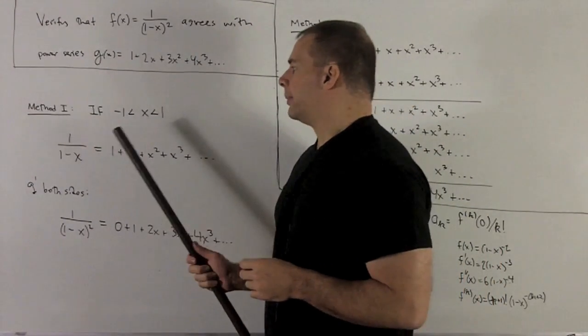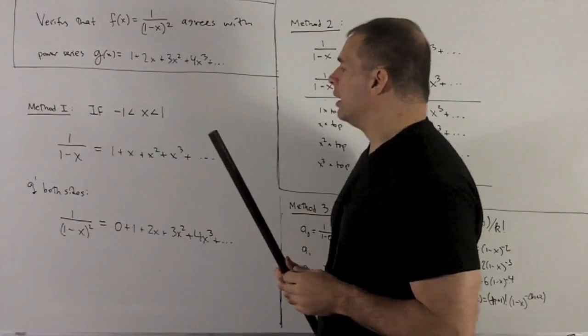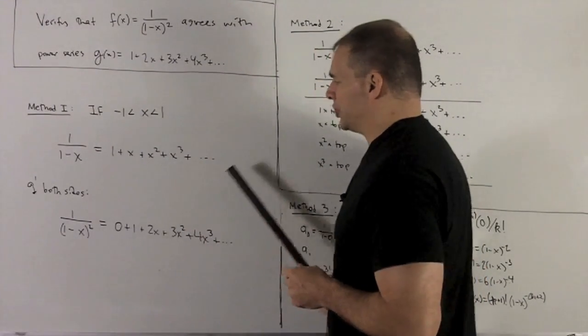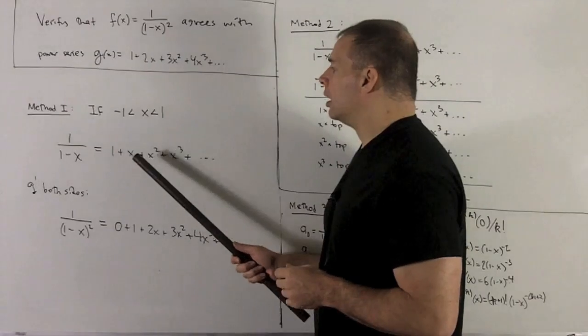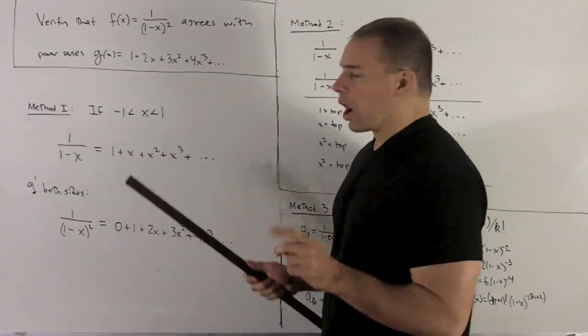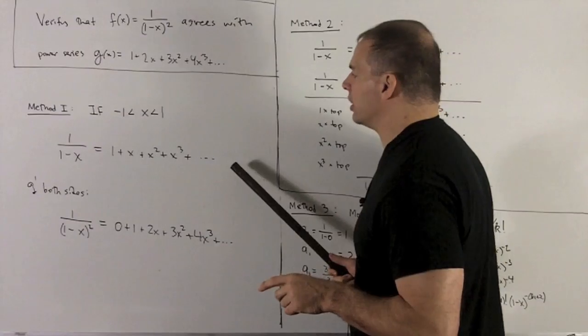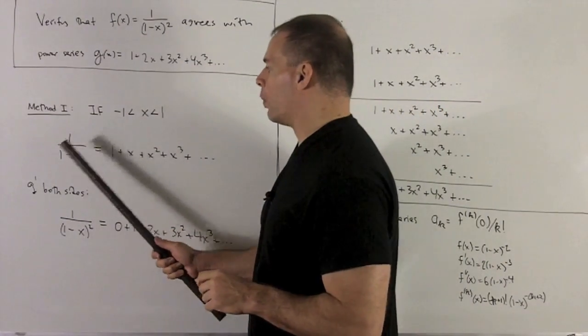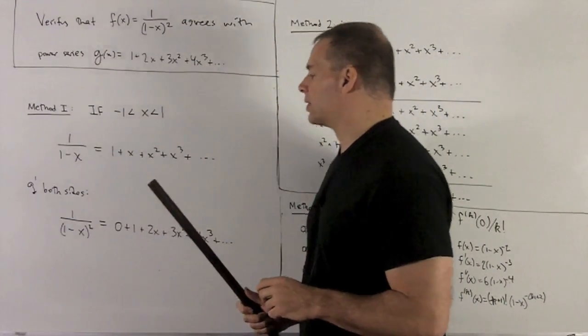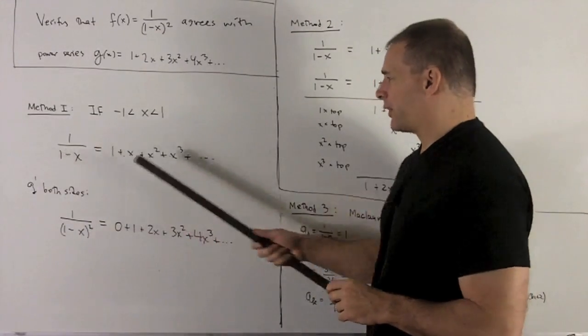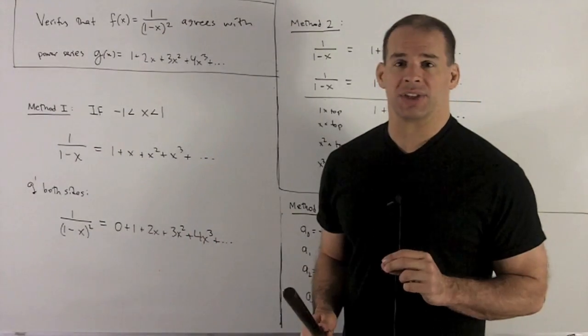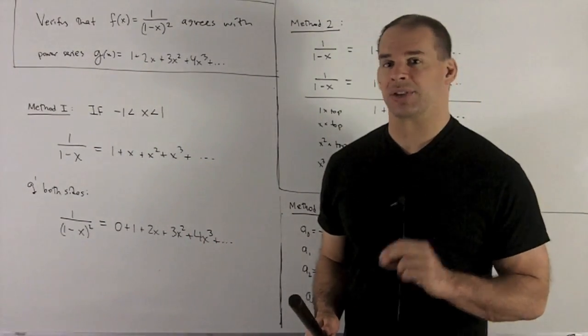For Method 1, if we're in the region -1 to 1, then we know if I have our geometric power series here, since our r in absolute value is less than 1, I can take this expression and rewrite it as 1/(1-r), and here our r is just going to be an x. That's just rewriting things as a geometric power series.